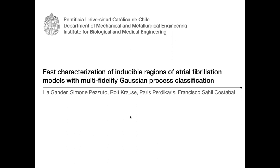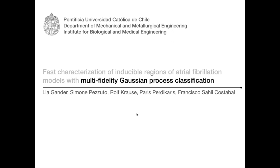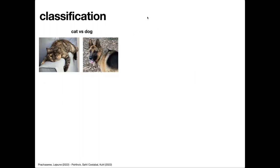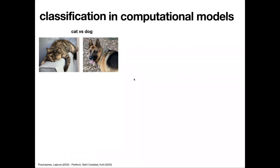Thanks for the introduction and the invitation. This work is actually a big collaboration between a group in Switzerland, at Universidad de la Svizzera Italiana, and also with Paris Verdicaris from UPenn. I will present this paper that we published this year, but I also wanted to make this talk a bit more general about multifidelity Gaussian process classification, which is a topic I have been working on for the last couple of years. In the classical machine learning setting, classification is just distinguishing between two binary variables — the classical example being recognizing a cat versus a dog in a picture. We can use many techniques like convolutional neural networks, but there are also some classification problems in computational models, and that's what I will be talking about today.